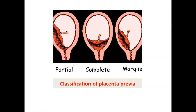The single most important risk factor for placenta previa is a previous uterine scar, for example a previous caesarean section. The incidence is about 0.5% in the general population, but rises to about 4% in mothers with a previous caesarean scar. Other risk factors include scars from surgeries like myomectomy, smoking, advanced maternal age, multiparity, and multiple pregnancy.